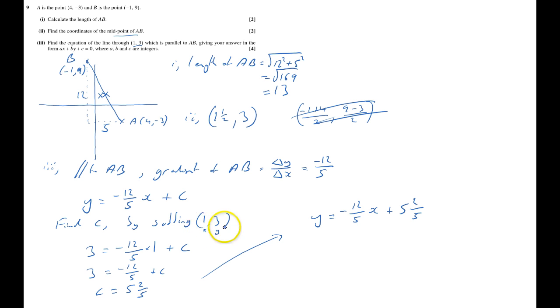It wants it in terms where A, B, C are integers, so I'm going to have to times everything by 5, which gives me 5y = -12x + 5 times 5 and 2/5 will be 27. And now I've got to put it all on one side, add 12x, so 12x + 5y - 27 = 0. They're all integers, it is in the right form, so that's the question done.